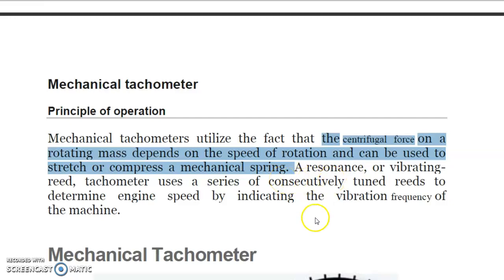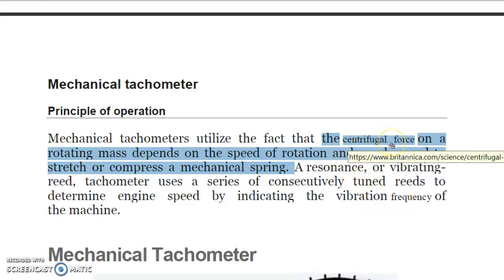A resonance or vibrating reed tachometer uses a series of consecutively tuned reeds to determine engine speed by indicating the vibration frequency of the machine. Whenever there is a rotating shaft, there is a centrifugal force acting on it, and the speed of rotation depends on that centrifugal force, which can be used to stretch or compress a mechanical spring.